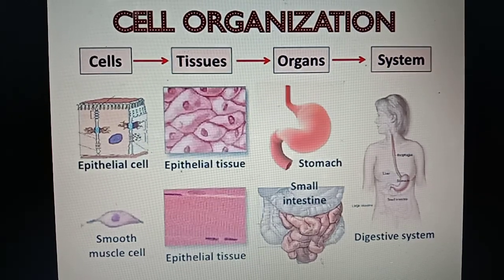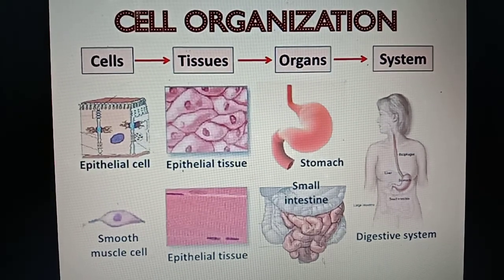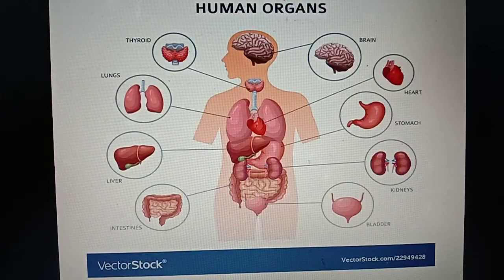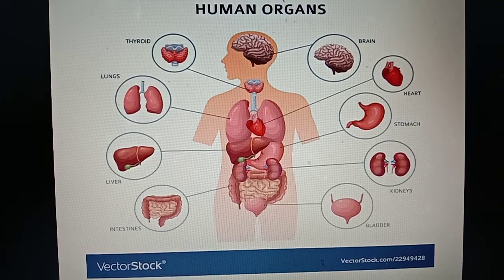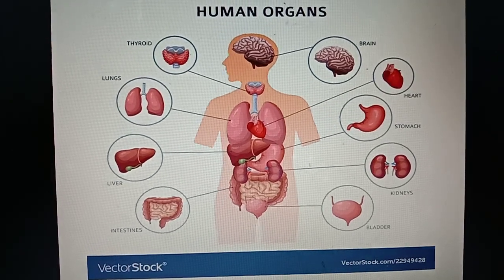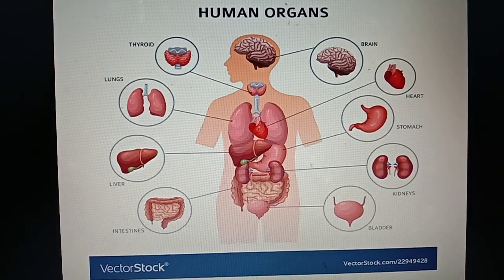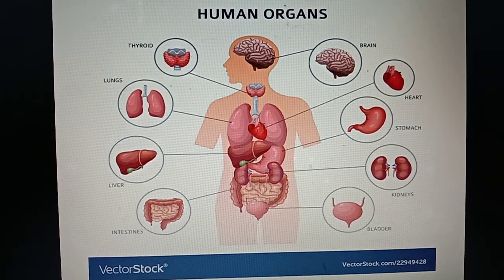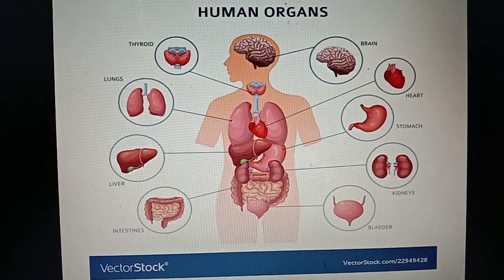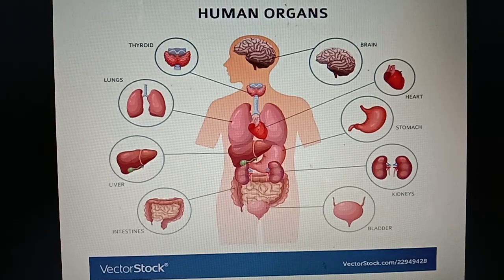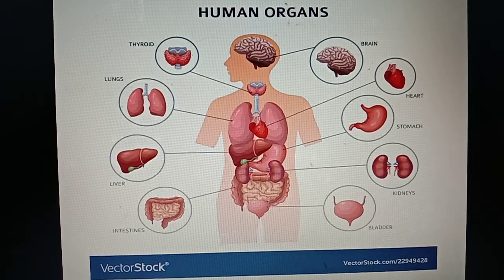The organs that are present inside our body and not visible to our eyes are called the internal organs — for example, brain, heart, stomach, etc.